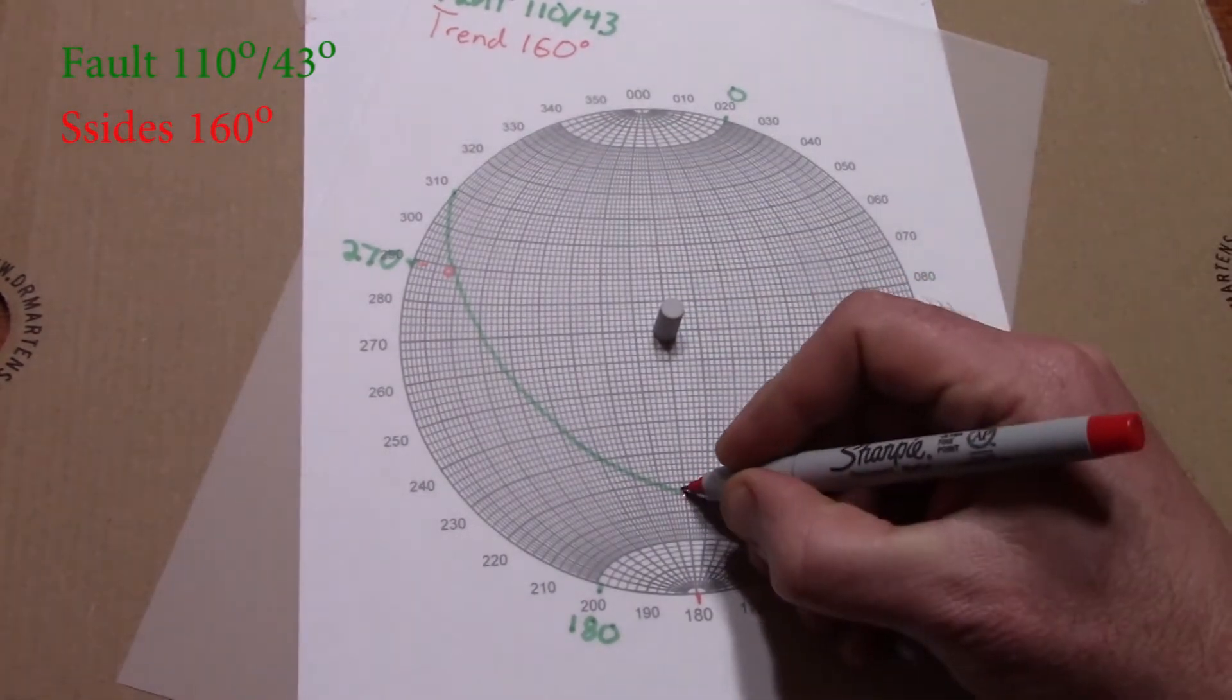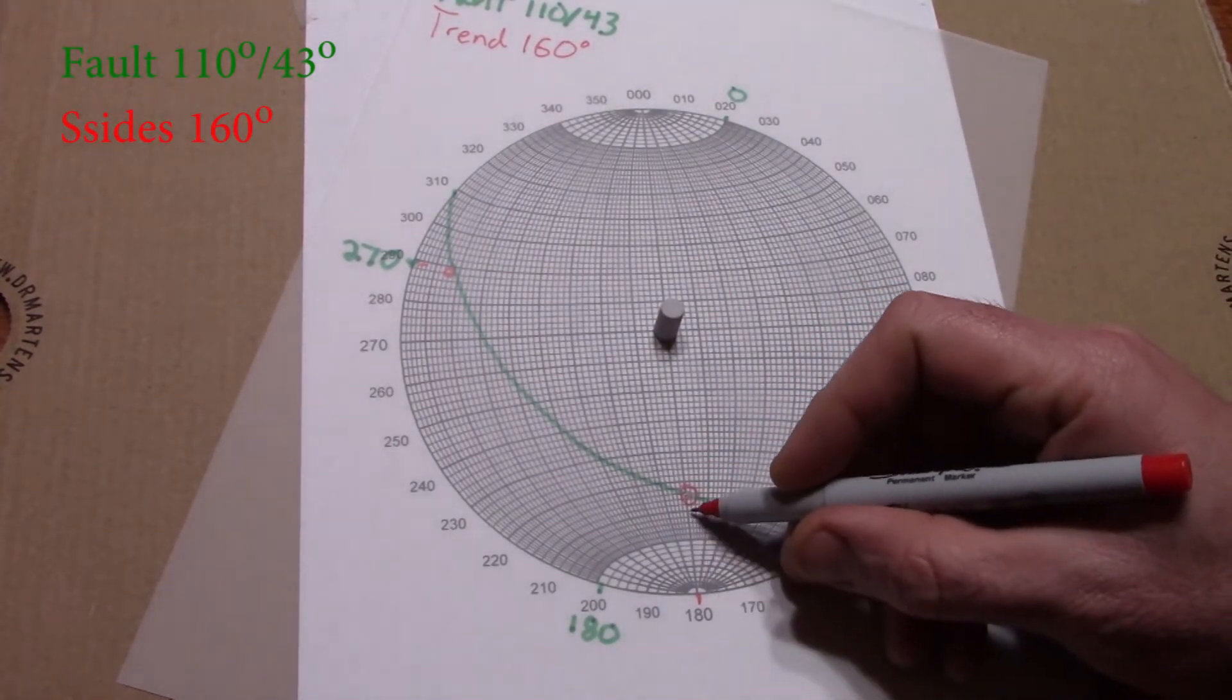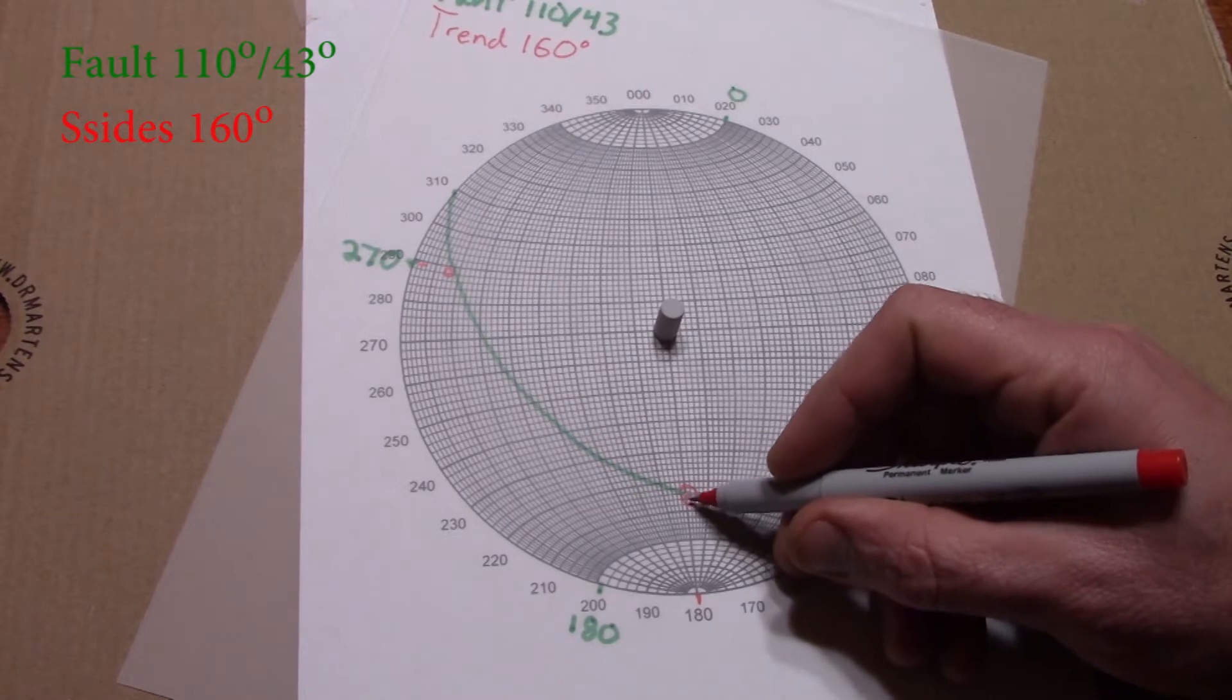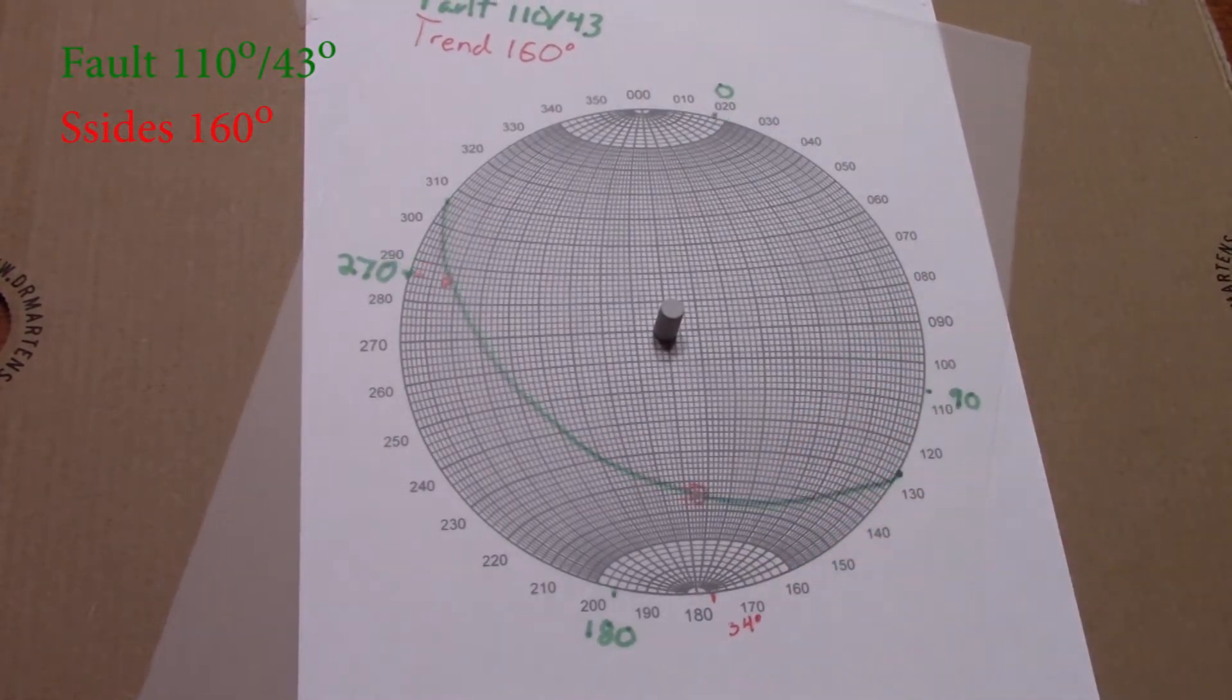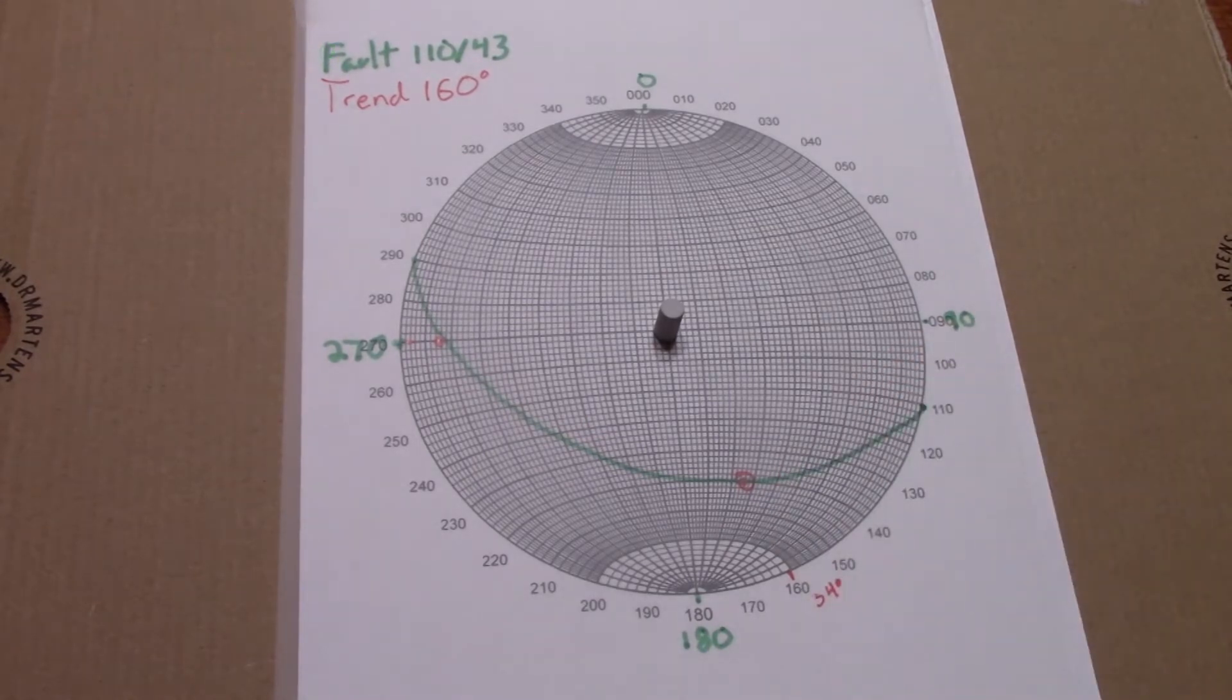And we can even determine the dip of the lineations now by counting in on a cardinal line, which knowing that it can never be greater than the dip of the planar fault, and in our case the linear plunge angle is 34 degrees, which is obviously less than the planar dip of 43.